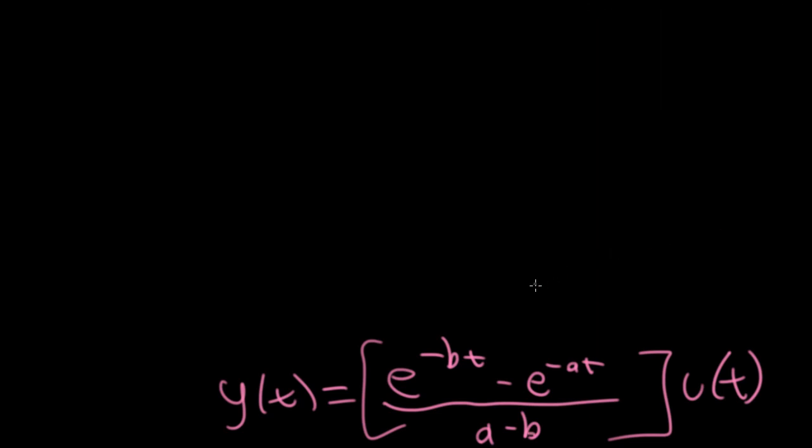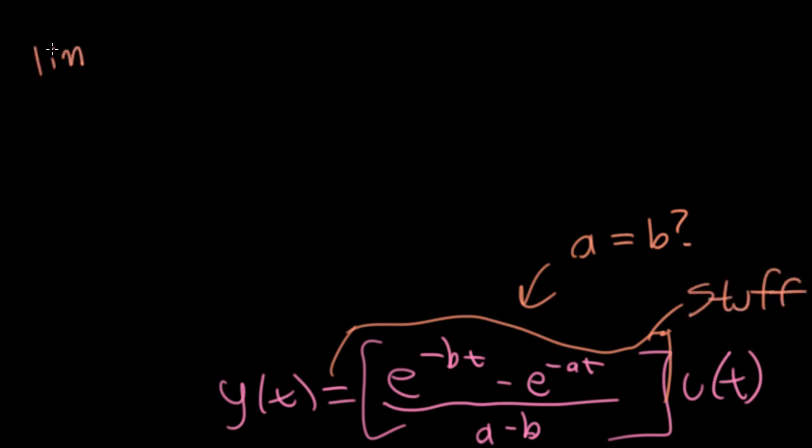So if you look at this particular example, you might ask yourself, what about the case where a equals b? We run into a bit of a quandary, because if a is equal to b, I have a one here, I have a one here, they subtract to give me zero. I have a one here, and I have a one here, and they subtract and give me zero. I'm going to not worry about the u for a second. Let's call this stuff.